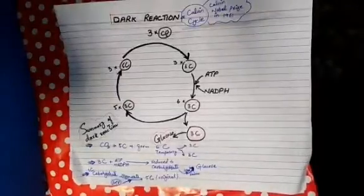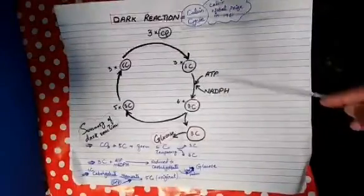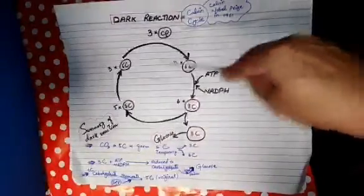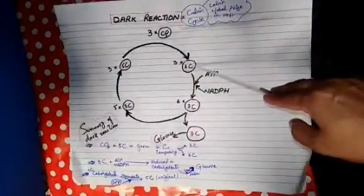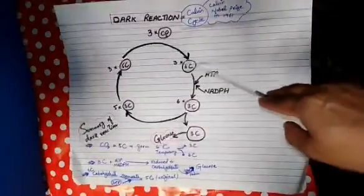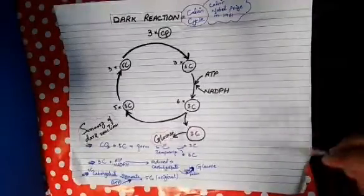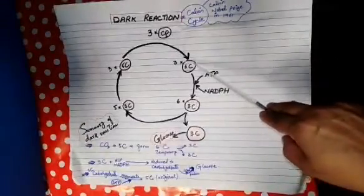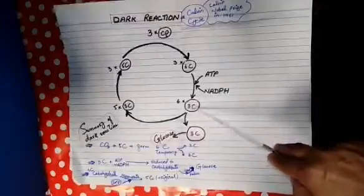When carbon dioxide and the 5-carbon compound combine together, they form a 6-carbon compound. But this 6-carbon compound formed by the combination of these two is not permanent — it is temporary. It will split into 2 three-carbon compounds. The 6-carbon compound splits into 2 three-carbon compounds.